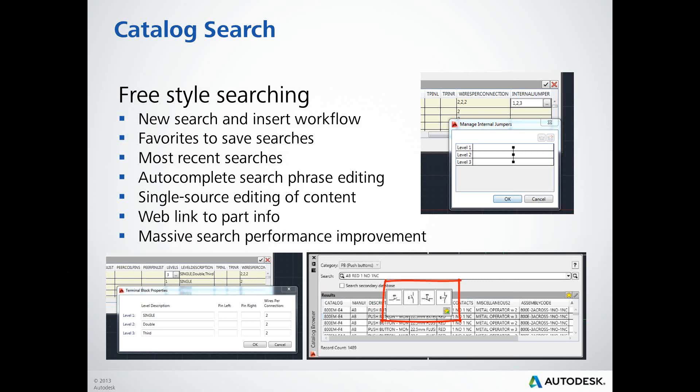The next topic is AutoCAD Inventor 2D to 3D Interoperability. We're using the same catalog browser interface you're used to in AutoCAD Electrical inside the Inventor environment. It'll be the same processes — looking up the catalog part number, selecting the 3D component, and inserting it into Inventor. It's much more integrated, and we're working hard to enhance this in future versions.